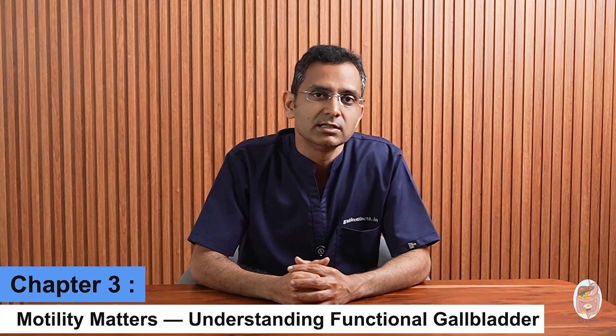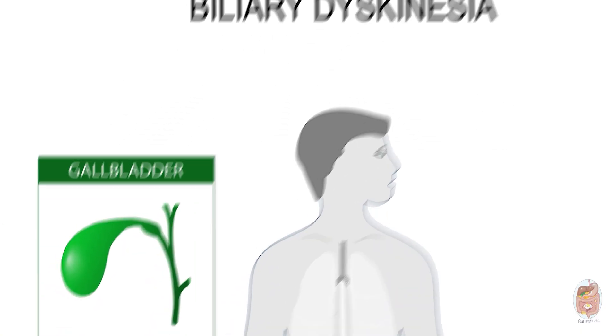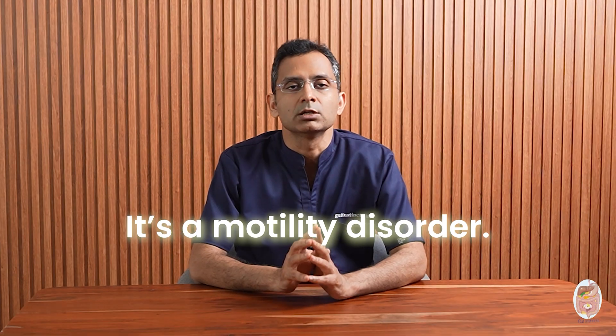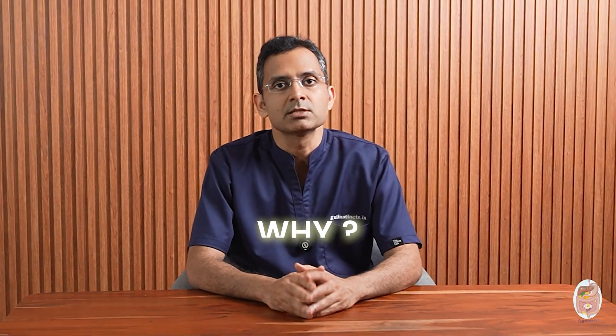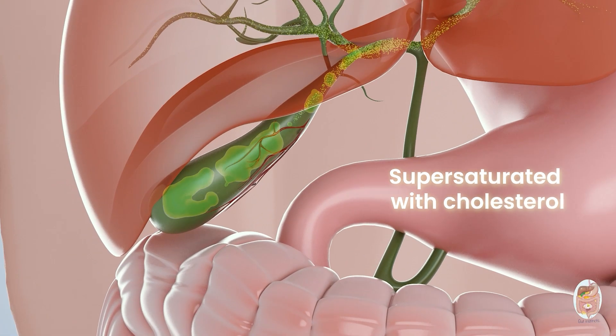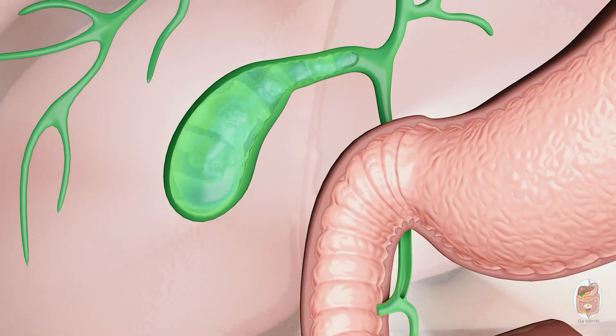Let's unpack the first one: functional gallbladder disorder. This is the poster child for our opening quote. Previously called biliary dyskinesia, it mimics classic gallstone symptoms but without any stones or structural abnormalities on imaging. It's a motility disorder — the gallbladder looks normal but doesn't contract properly to release bile. Sometimes the bile is too thick, supersaturated with cholesterol. Other times, the gallbladder muscles themselves are poorly coordinated.